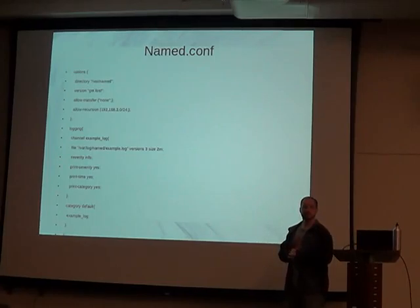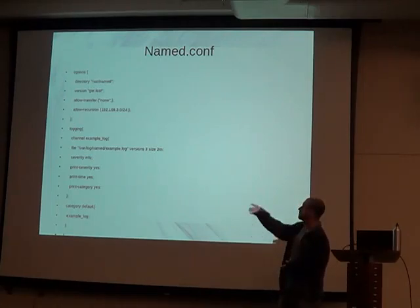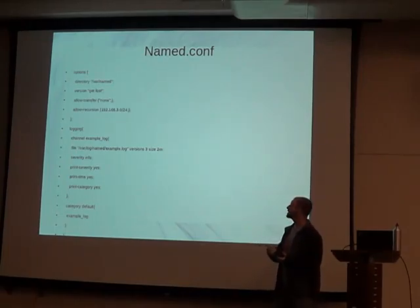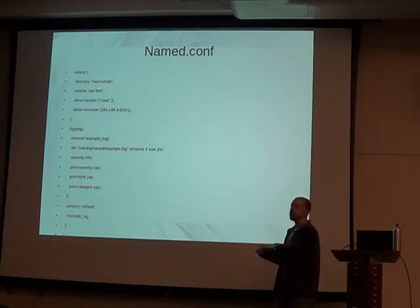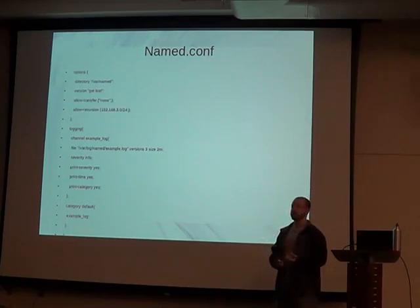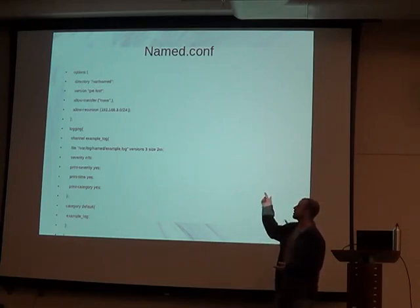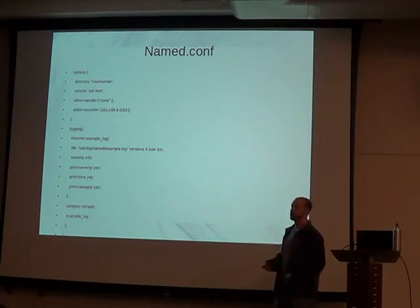The named.conf file is fairly simplistic — just a couple of brackets with some information in it. The options section contains your primary default settings. The directory option lists the directory where your db zone files are located — /var/named is the default. The version option: you can set the version string, and if you don't put that line in, it will print out the default version it's running automatically. If you put it in, you can substitute whatever message you want.